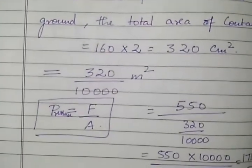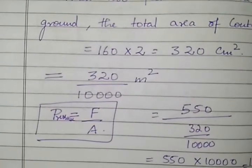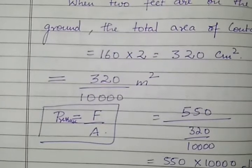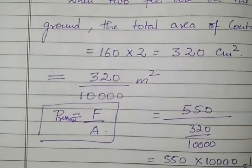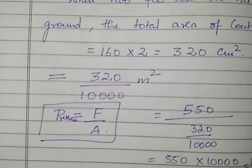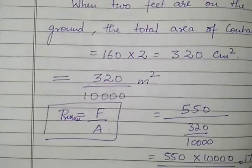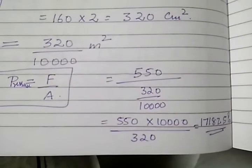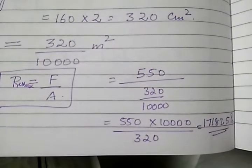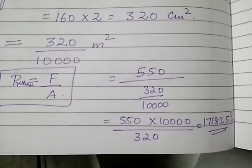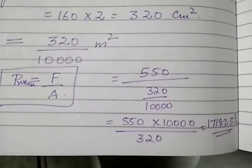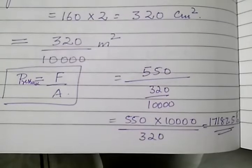Now using the formula for pressure that is pressure is equal to force by area we take 550 by 320 by 10,000. If you do the calculation the answer is 17187.5 this would be in Pascals or you can also say Newton per meter squared.